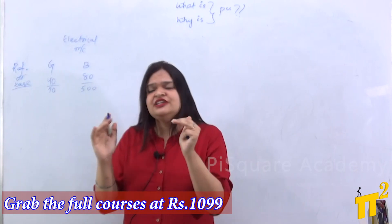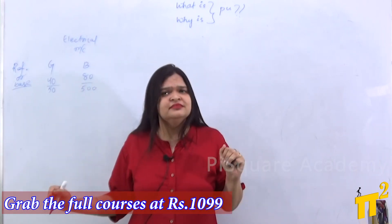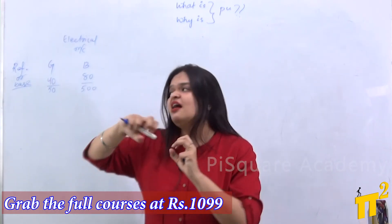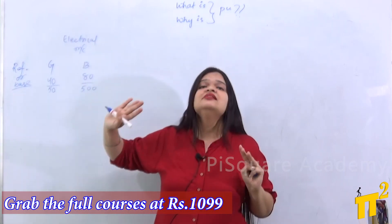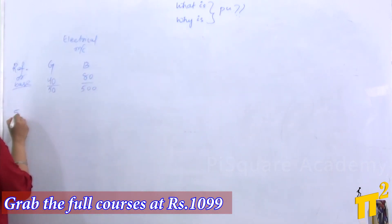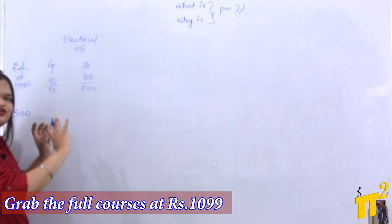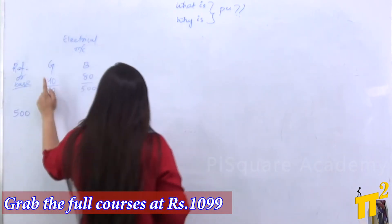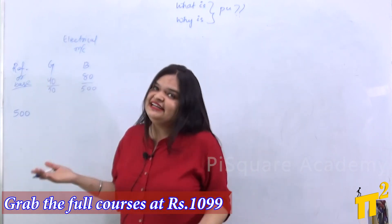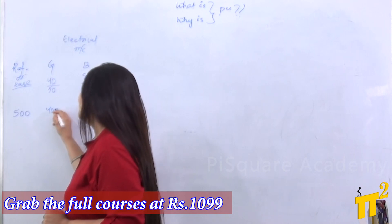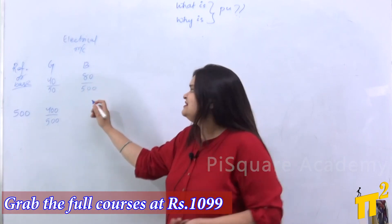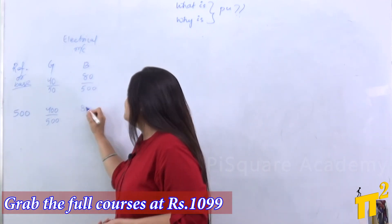Whatever base or reference you take, we need to scale our values to that base or reference. Suppose I take 500 as the base. Then I need to bring the girl's score to a denominator of 500 — that means I multiply both the numerator and denominator by 10, so it becomes 400 by 500. The boy's score already has the base as 500, so it stays as 80 by 500.